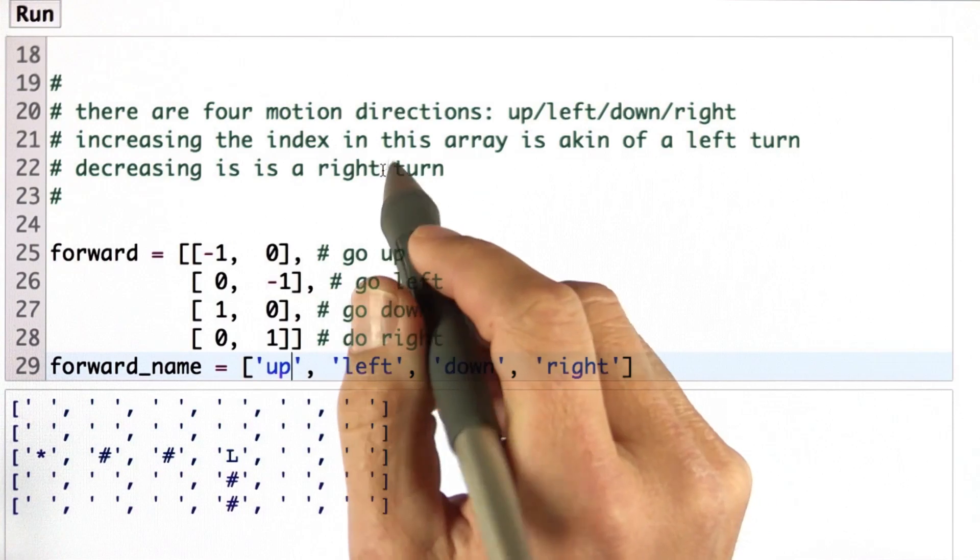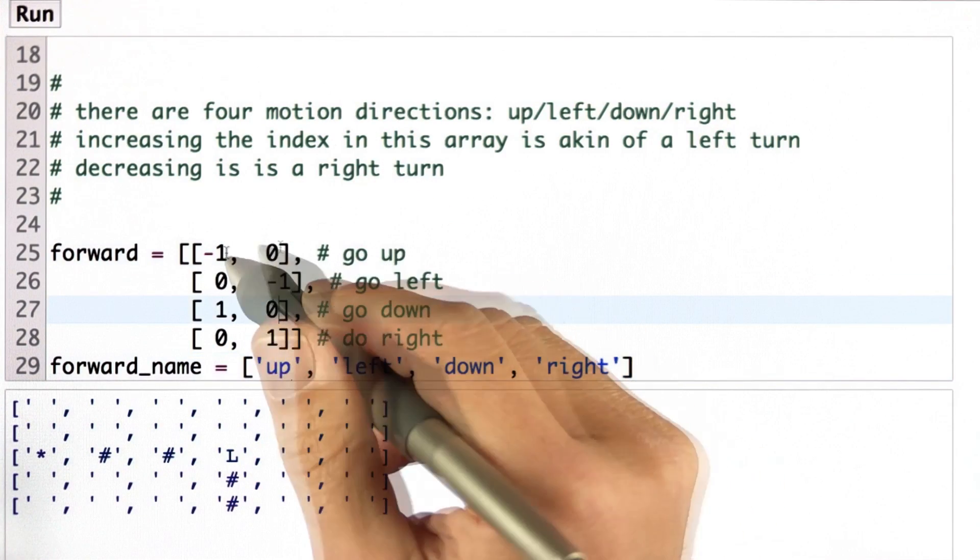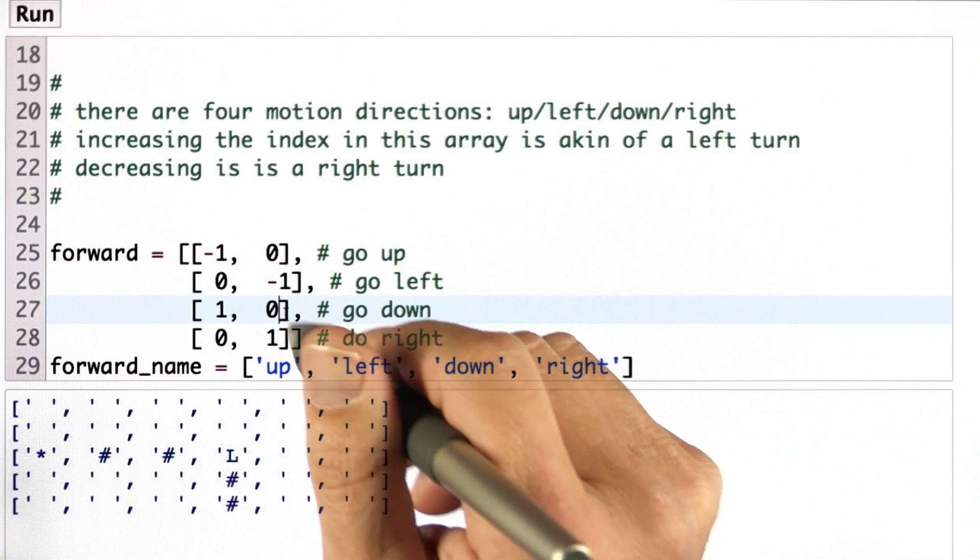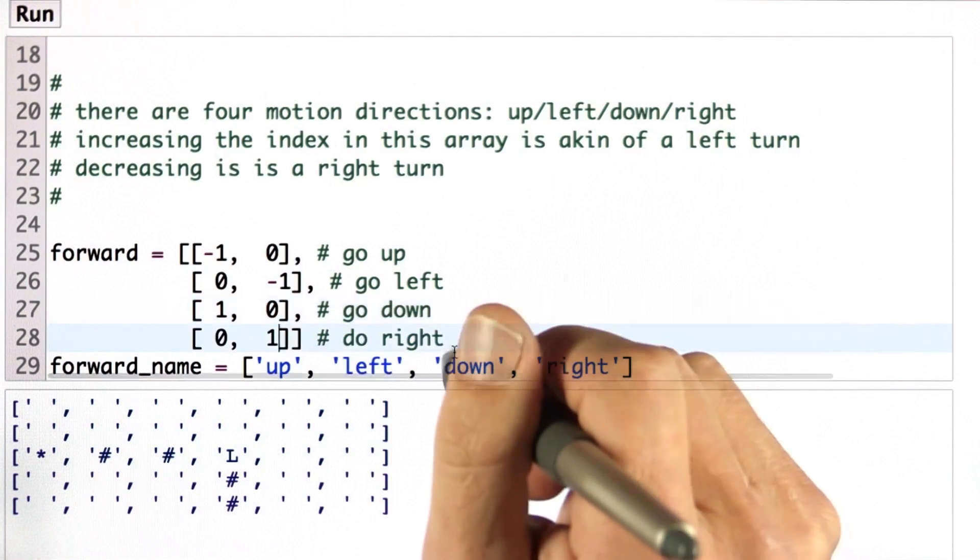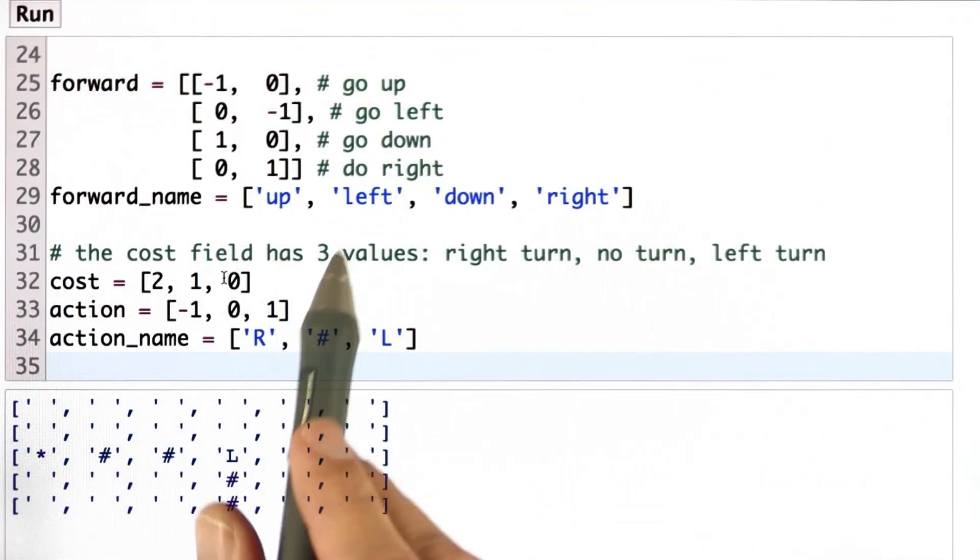And here are my orientations: 0, 1, 2, and 3. First one makes the world go up, the second go left, the third one go down, and the fourth one go right. Here are the names associated with it: up, left, down, and right.